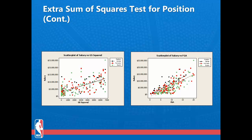These graphs demonstrate the differences seen among positions. On the left, we see salary versus games started squared, and on the right, salary versus field goals attempted per game. On neither graph is there a discernible difference among the positions.